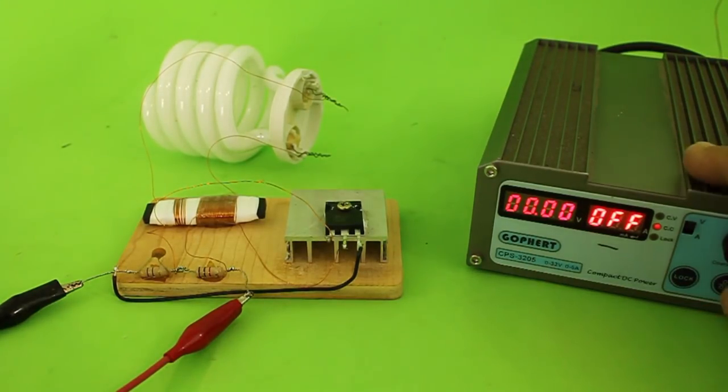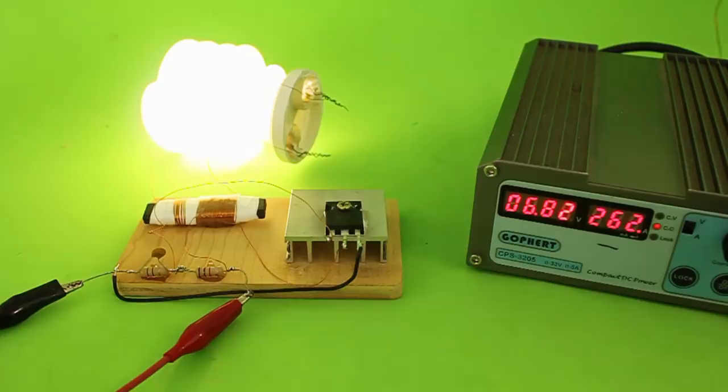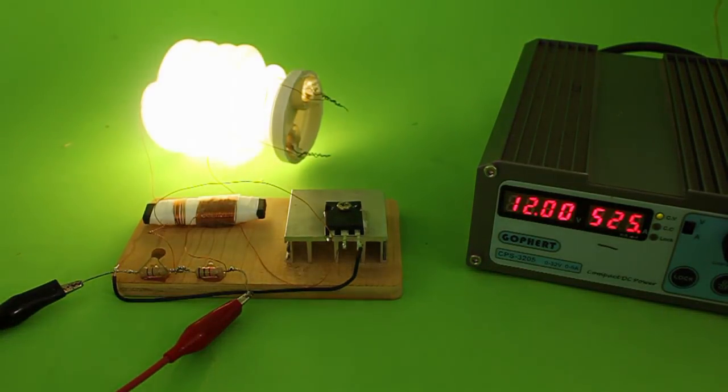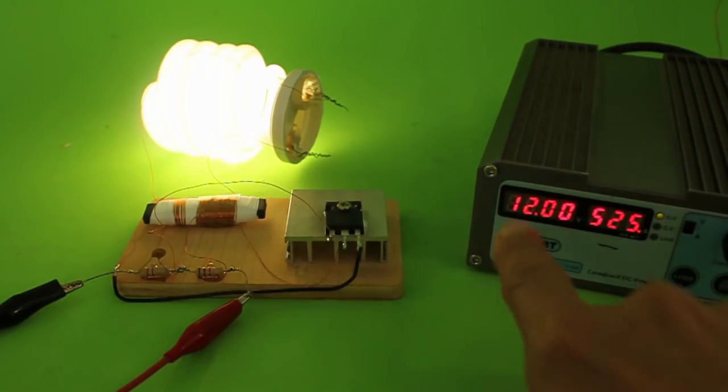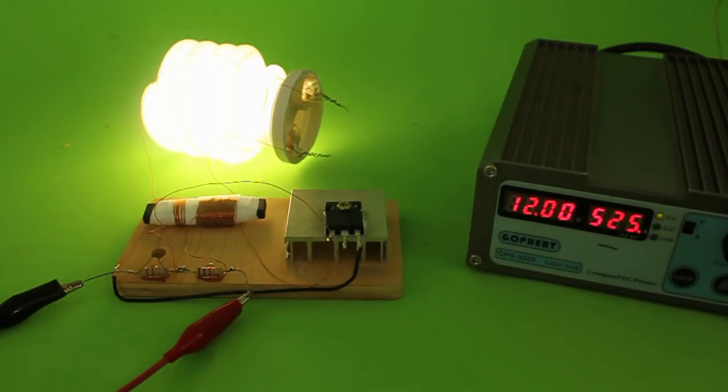I am going to turn on the power supply. So there you have it. We have a current of a little more than 500 mA at 12 volts. So that is roughly 6 watts of power.